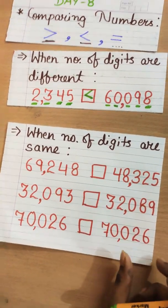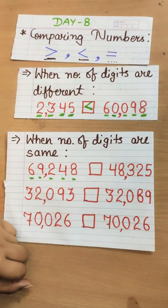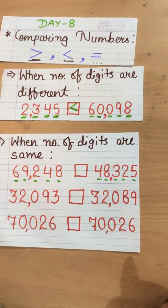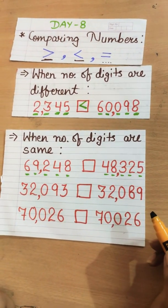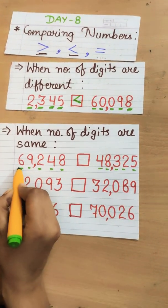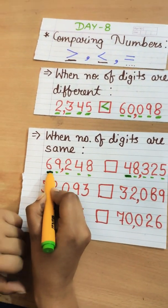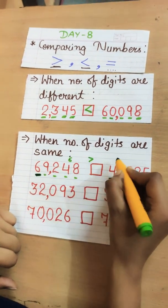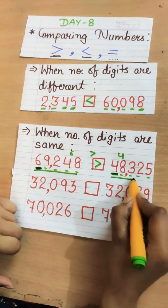Now, when the number of digits are same. Like let's see. One, two, three, four, five. Here are five digits in this number. One, two, three, four, five. Here are also five digits in the number. Now, we will start comparing the number towards the left most side. Like this is my left side. Start comparing it from the left most side. So, here it is six and it is four. As we all know, six is greater than four. So, this whole number will be greater than this whole number.